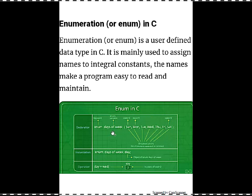Let's take an example where you are going to use days of the week in your program. Days of the week can only have seven values — Sunday, Monday, Tuesday, Wednesday, up to Saturday. If you use an integer data type, it can have values from -32768 to +32767, but days of the week have only seven values. In such scenarios you can use enum.